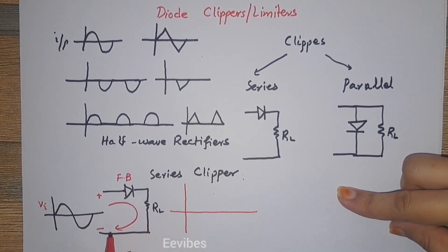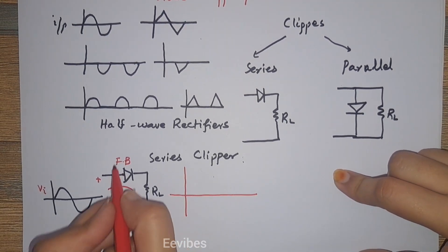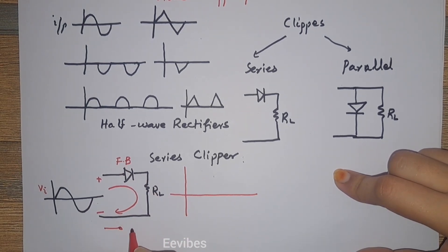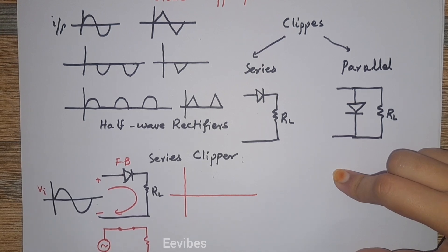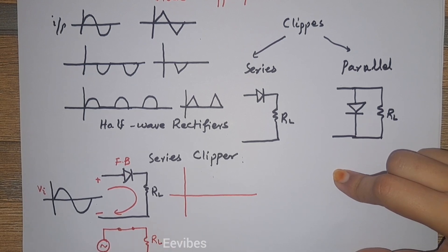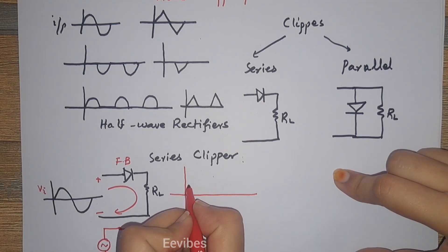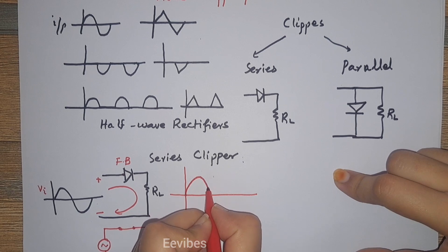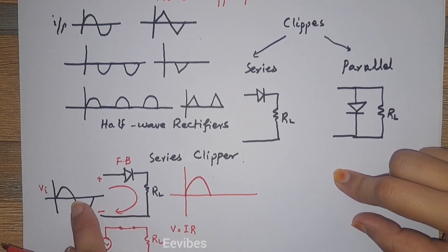Since the diode is forward biased, you can replace it with a short circuit in the case of an ideal diode model. You can then simply apply Ohm's Law for determining the value of the output voltage or the voltage across the load resistor R_L. So V equals I times R. In this way, you will see that the output voltages will appear across the load for the whole positive cycle.